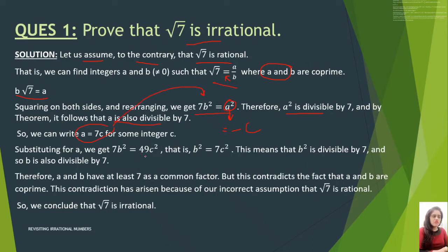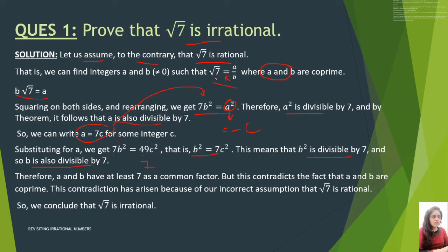Substituting, you get 7B squared equals 49C squared. Cancelling 7 and 49 gives you 7, so B squared equals 7C squared. That means B squared is divisible by 7, and therefore B is also divisible by 7. But we assumed that A and B are co-prime — they should not have common factors other than 1. However, A and B both have 7 as a common factor, which contradicts the assumption. This contradiction arose because we assumed root 7 is rational, so our assumption is incorrect and root 7 is irrational.